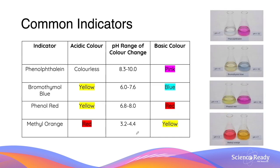Here are some common indicators we'll see in the classroom: phenolphthalein, bromothymol blue, phenol red, and methyl orange. Phenolphthalein at acidic pHs below 7 is colourless, and at basic pHs it's pink. Its pH change range is 8.3 to 10, so it remains colourless until 8.3. Bromothymol blue is yellow in acid and blue in base, with a change range of 6 to 7.6. Phenol red is yellow below 6.8 and red above 8.0. Methyl orange is red below 3.2 and yellow above 4.4.